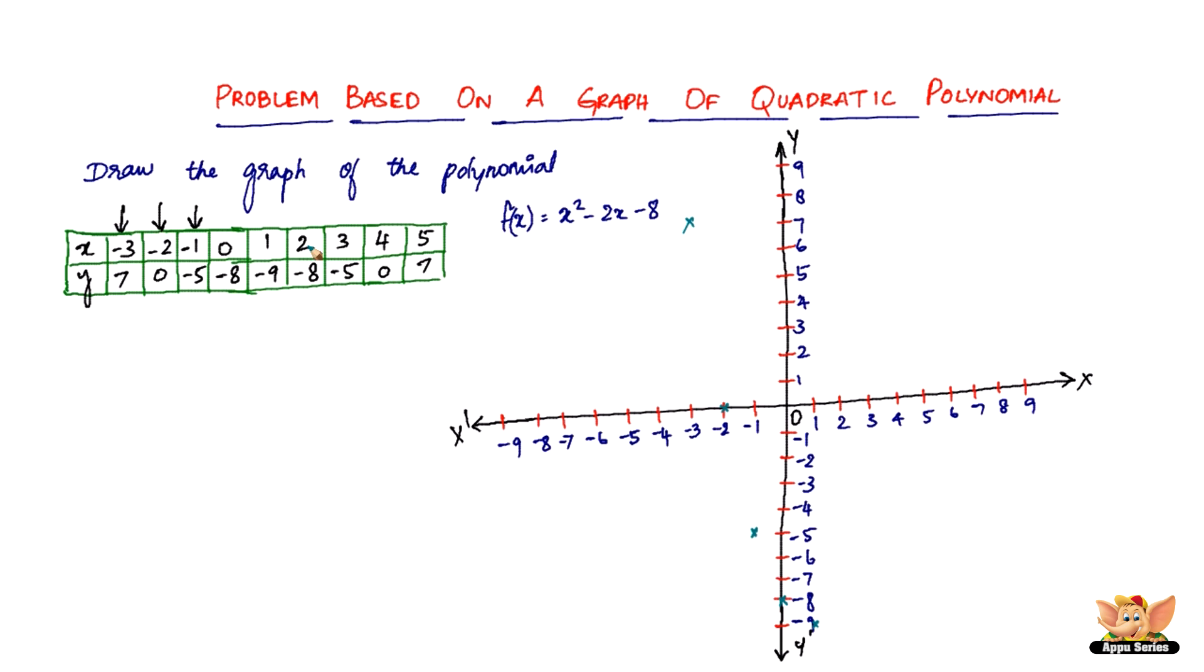And next is 2 on the x and negative 8 on the y. So 2 on the x and negative 8 on the y, it's going to be somewhere here. And next is 3 on the x and negative 5 on the y. So 3 on the x and negative 5 on the y is going to be somewhere here. You can already see the u that we are getting if you notice it.